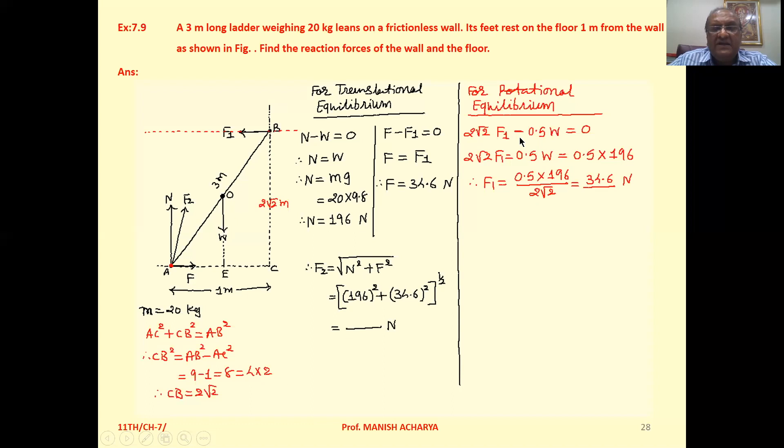So perpendicular distance 0.5 into force W, that is negative because it will give you the rotation like this. For rotational equilibrium, we can write the resultant torque equals 0. So 2 root 2 F1 equals 0.5 W. But W is mg, that is 196 we already calculated. Substitute here. Then F1 equals 0.5 into 196 upon 2 root 2. If you solve it, then your answer will be 34.6.